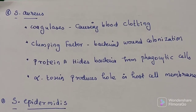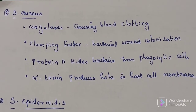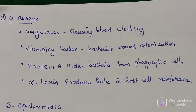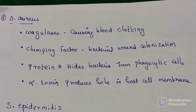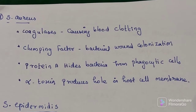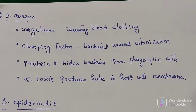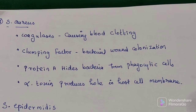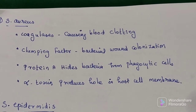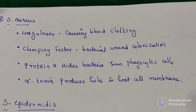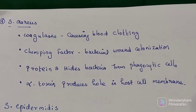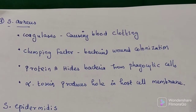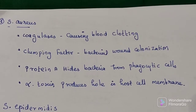Staphylococcus aureus has coagulase, which causes blood clotting, a clumping factor for bacterial wound colonization, and protein A which protects from phagocytic cells. Some of them also have alpha toxin, which produces holes in the host cell membrane, causing lysis of blood cells and other cells.